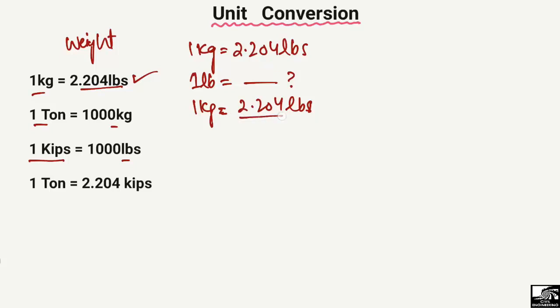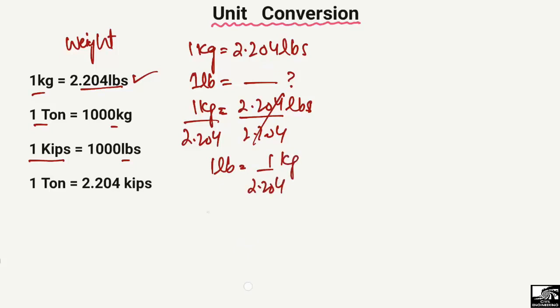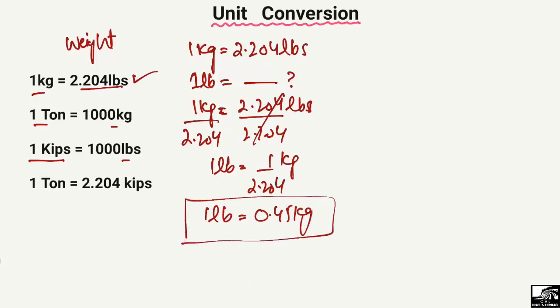We divide the value written with the pound on both sides — so 2.204 here and 2.204 here — and we get 1 pound equals 1 divided by 2.204 kg. So 1 pound comes out to be 0.45 kg. This is the way to find how many kg are in 1 pound.